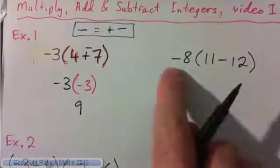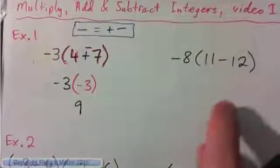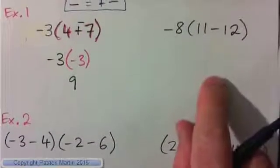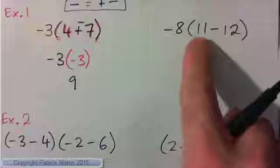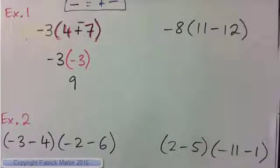Press pause, write this one down, and do it yourself: negative eight times, parenthesis, eleven minus twelve. Press pause, write it down, do it yourself, and then check the answer.